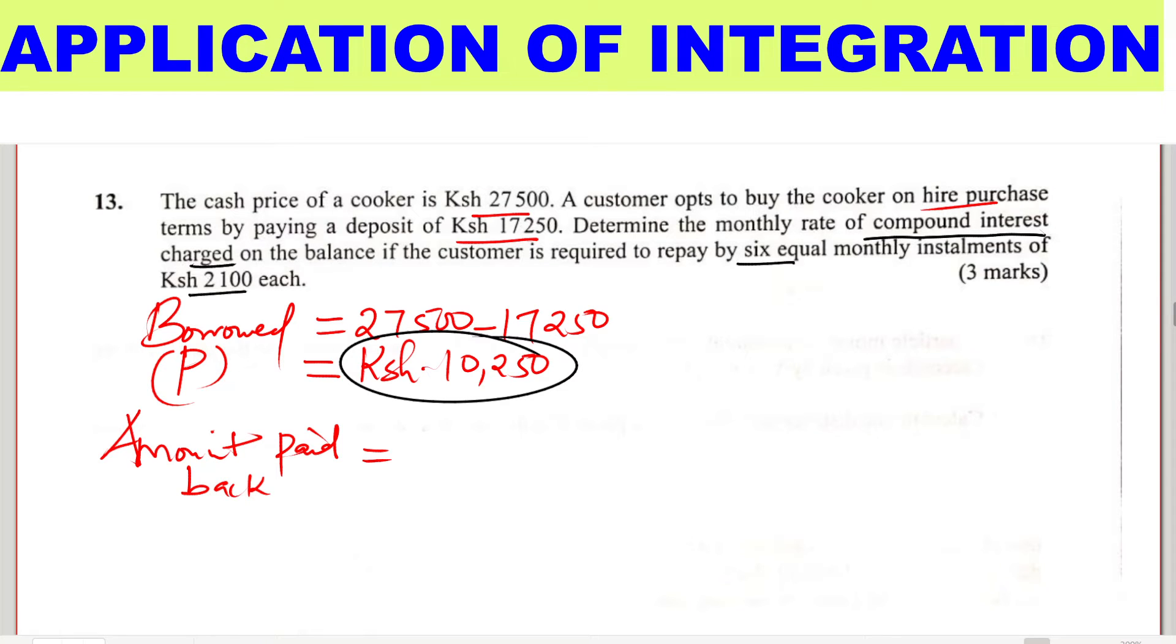The amount every month is $2,100. For six months, we multiply $2,100 by 6, which gives $12,600. This is the total amount that will be paid back. The amount borrowed is $10,250, which was the balance after the deposit, but the amount paid back is $12,600.